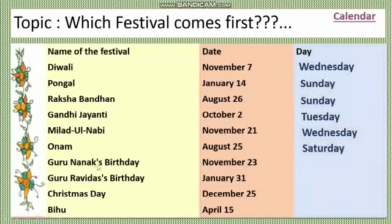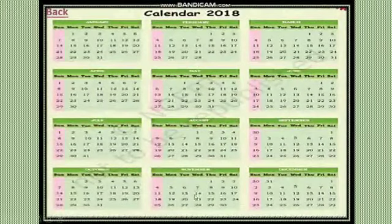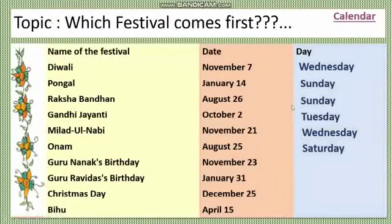Then Guru Nanak's birthday — which day? It's on November 23rd. Let's see November 23rd — again November month and date 23rd. Which day is the 23rd? Friday. So your answer is Friday.